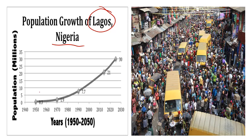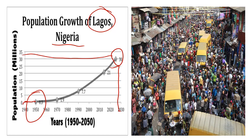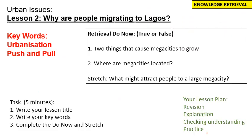In 1950, the population was not even 1 million. And by 2030, the population is expected to be over 30 million. Today, why are people migrating to Lagos?